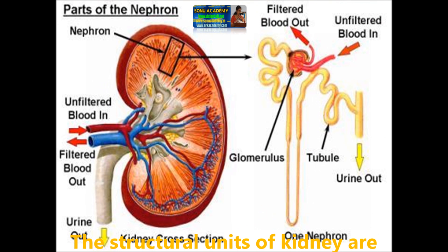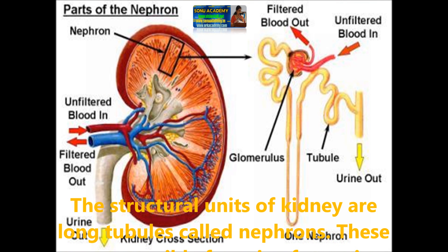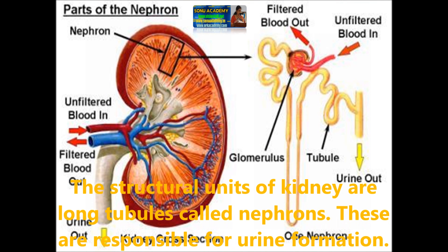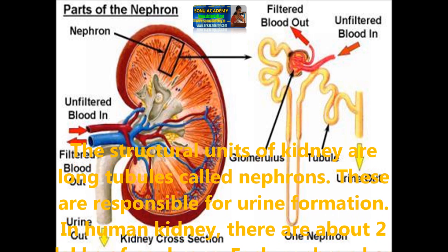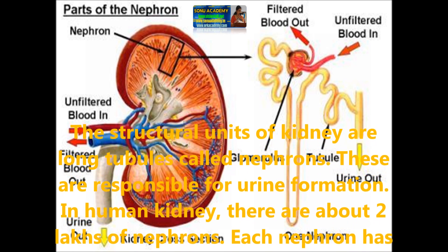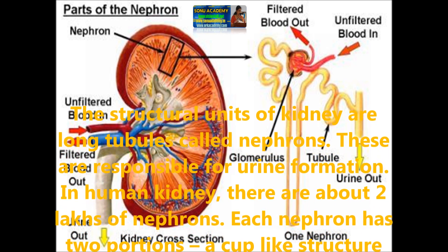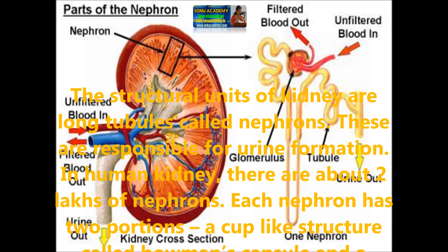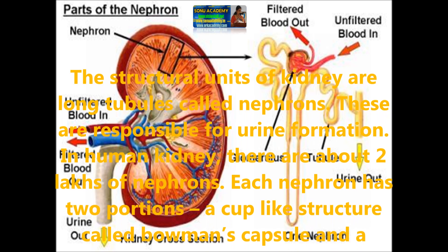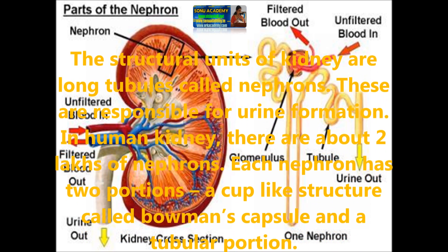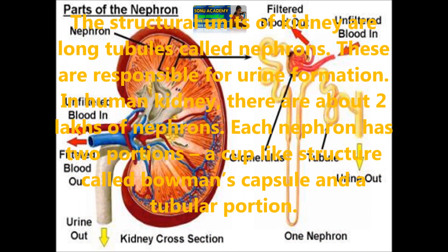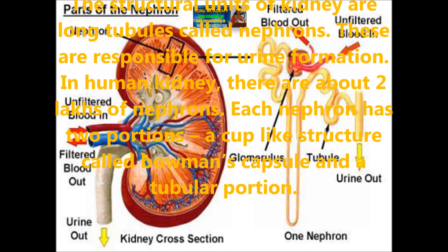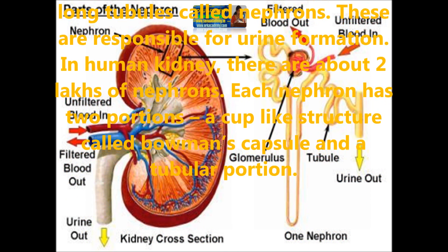Let us discuss the structure of the nephron. The structural units of kidneys, which are long tubules, are called nephrons. These are responsible for urine formation. In the human kidney, there are about 2 lakh nephrons present.